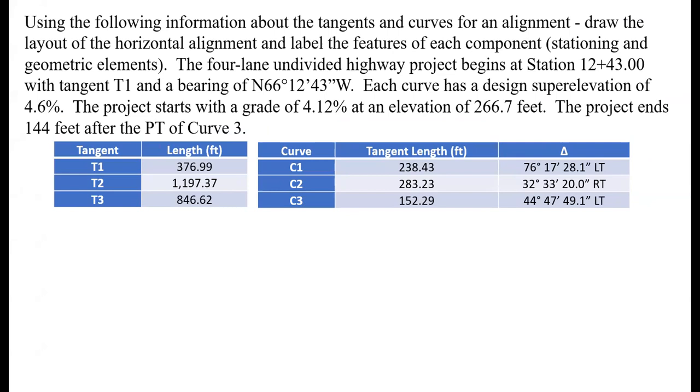We're given tables with information about tangents and curves, and asked to draw the layout of the horizontal alignment and label the features of each component, stationing and geometric elements. This is a four-lane undivided highway starting at station 12+43 with tangent T1 at bearing N66°12'43"W. Each curve has a design superelevation of 4.6%. The project starts with a grade of 4.12%, elevation of 266.7 feet, and ends 144 feet after the PT of curve three.